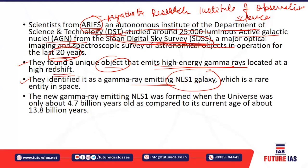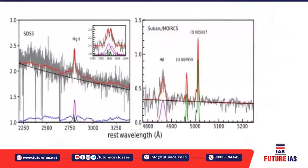Such high-energy photons are emitted from gamma rays, which have the shortest wavelength in the electromagnetic spectrum. This new gamma-ray emitting NLS1 galaxy was formed when the universe was around 4.7 billion years old. Comparing this to the current age of the universe, which is around 13.8 billion years, this research can provide certain clues about the origin of our universe.